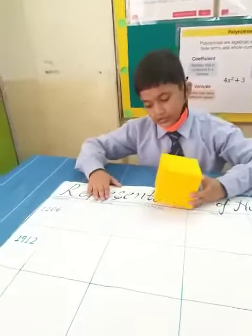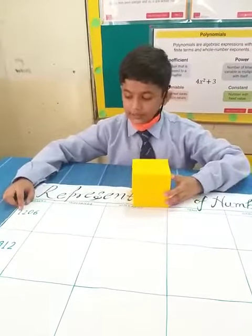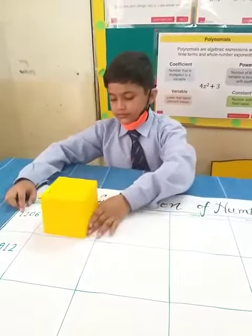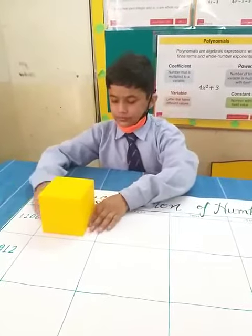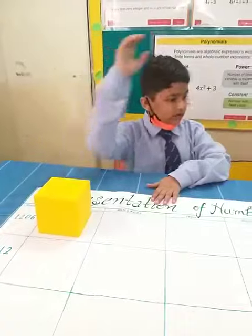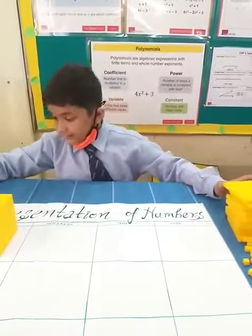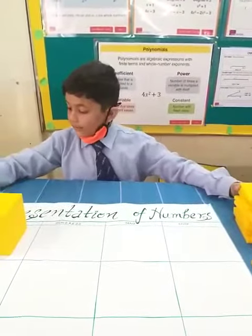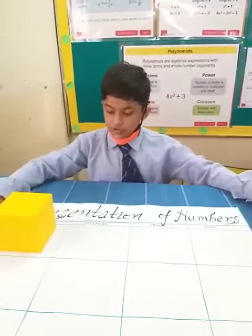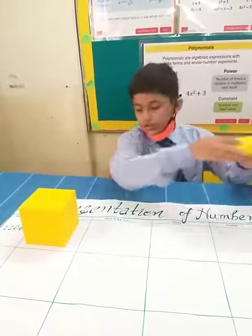So, on the 1000 place, I will keep 1 because it is 1000. On the 100 place, I will keep 2 because it is 200.